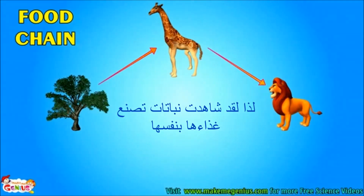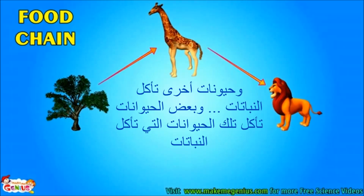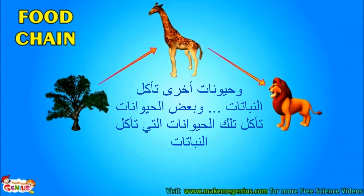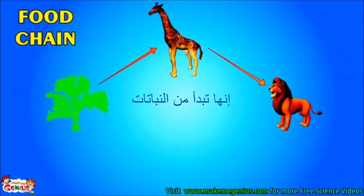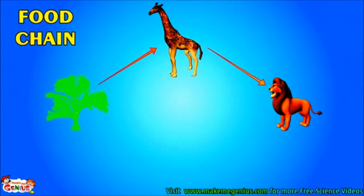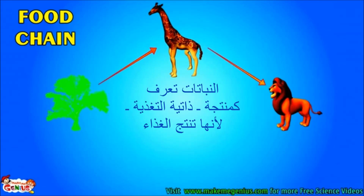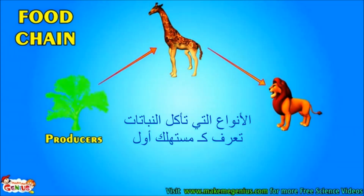So you have seen plants make their own food. Other animals eat plants, and some other animals eat those animals who eat plants. So all are dependent on plants. This is also called a food chain. It starts from plants. In a food chain, plants are known as producers as they produce food.